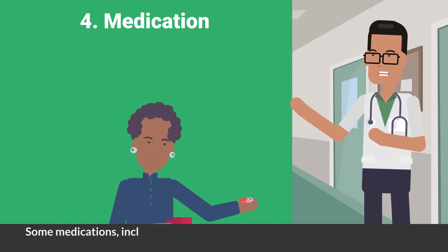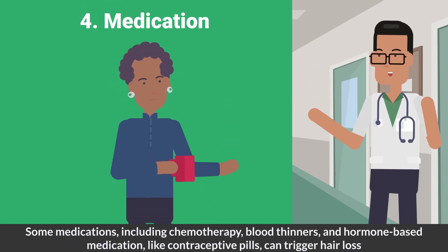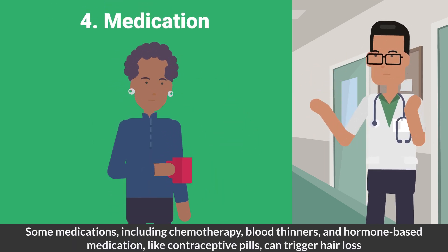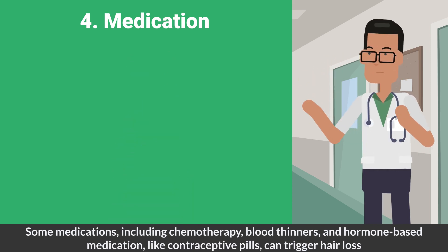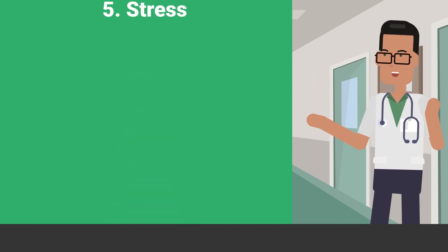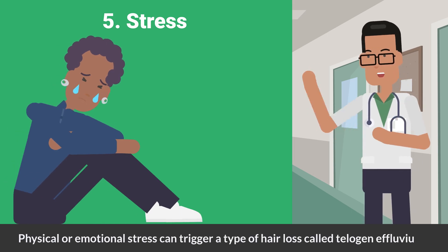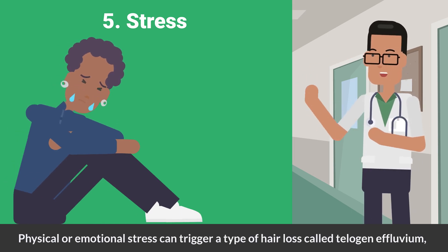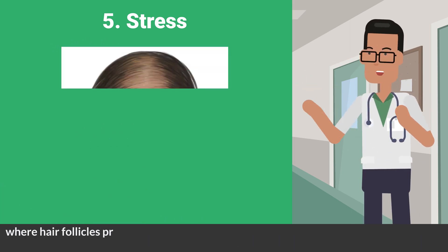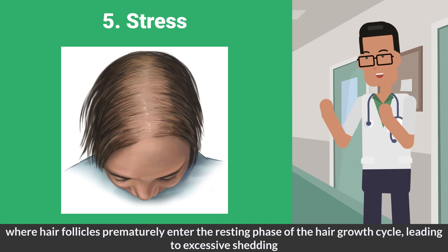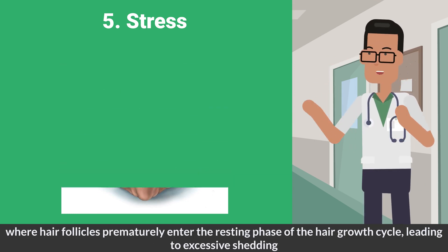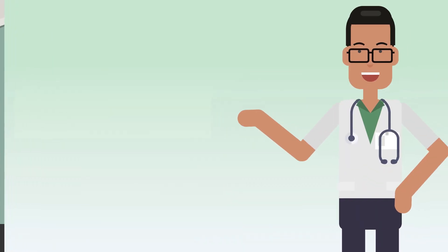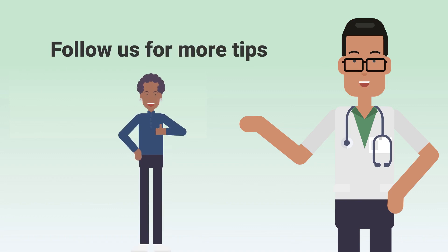Some medications including chemotherapy, blood thinners, and hormone-based medications like contraceptive pills can trigger hair loss. Physical or emotional stress can trigger a type of hair loss called telogen effluvium, where hair follicles prematurely enter the resting phase of the hair growth cycle, leading to excessive shedding. Hope this was helpful — follow Healthy Info for more information like this.